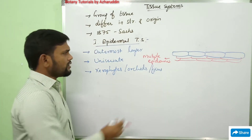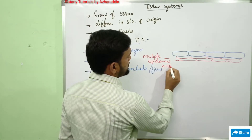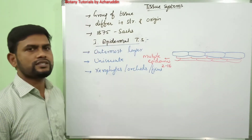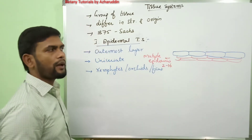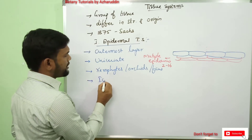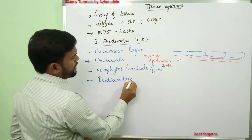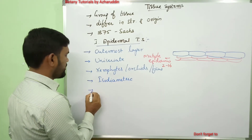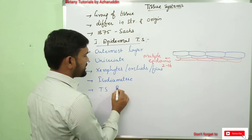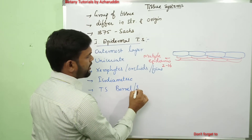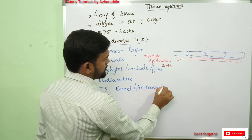This multi-layered epidermis is called multiple epidermis, composed of 2 to 16 rows of cells. Epidermal cells are isodiametric in shape. In transverse section, they appear barrel-shaped or rectangular.